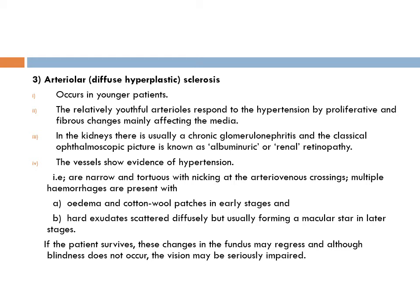The third category is arteriosclerosis with diffuse hyperplastic changes. Here the age group is young, but the arterioles, which are relatively healthy, respond to hypertension by proliferative and fibrous changes affecting the media. These patients also suffer from chronic glomerulonephritis in the kidneys. The classical fundus picture is known as albuminuric or renal retinopathy. Retinal signs show evidence of hypertension: narrowed, tortuous vessels, nicking at AV crossings, and multiple hemorrhages.